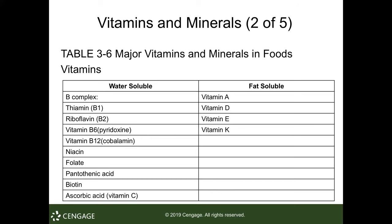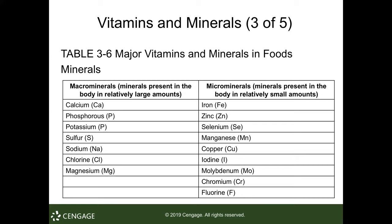You definitely don't want to overdo the fat-soluble vitamins. Macrominerals present in the body in large amounts include calcium, phosphorus, potassium, sulfur, sodium, chlorine, and magnesium — all found in bones and blood. Trace minerals present in small levels include fluorine, chromium, molybdenum, iodine, copper, manganese, selenium, zinc, and iron. The macrominerals in particular circulate freely, are bound in muscles, bones, and blood.